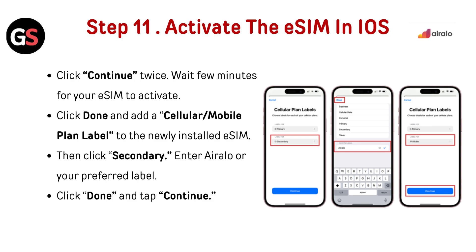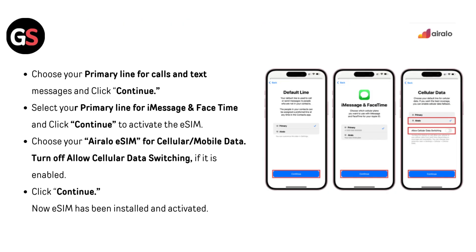Step 11 — Activate the eSIM in iOS: Click Continue twice and wait a few minutes for your eSIM to activate. Click Done and add a Cellular or Mobile Plan label to the newly installed SIM, then click Secondary. Enter AirLo or your preferred label, click Done and tap Continue. Choose your primary line for calls and texts, then select your primary line for iMessage and FaceTime. Click Continue to activate the eSIM, then choose your AirLo eSIM for cellular data. Turn off Allow Cellular Data Switching if enabled, and click Continue.